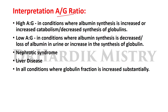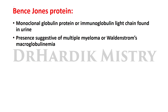Interpretation of albumin-globulin ratio: a high A/G ratio occurs in conditions where albumin synthesis is increased, or there is increased catabolism or decreased synthesis of globulins. A low A/G ratio occurs where albumin synthesis is decreased, or there is loss of albumin in urine, or increased synthesis of globulin. There is alteration of A/G ratio in nephrotic syndrome, liver disease, and conditions where globulin fraction is substantially increased. Bence Jones protein is a monoclonal globulin protein or immunoglobulin light chain found in the urine, and its presence is suggestive of multiple myeloma or Waldenström's macroglobulinemia.